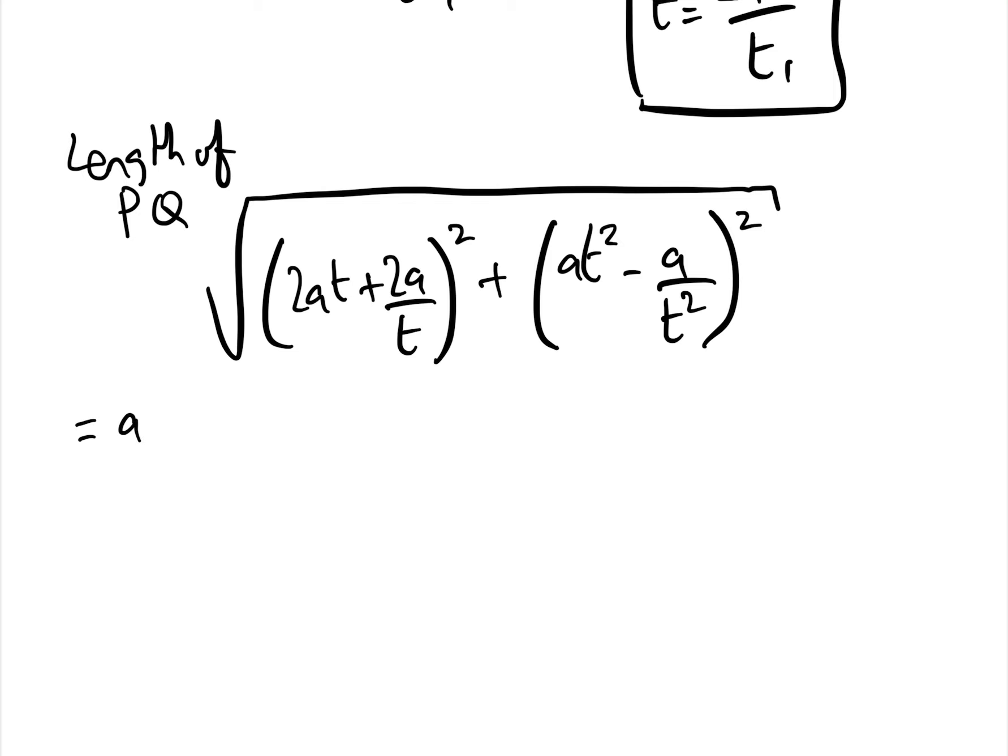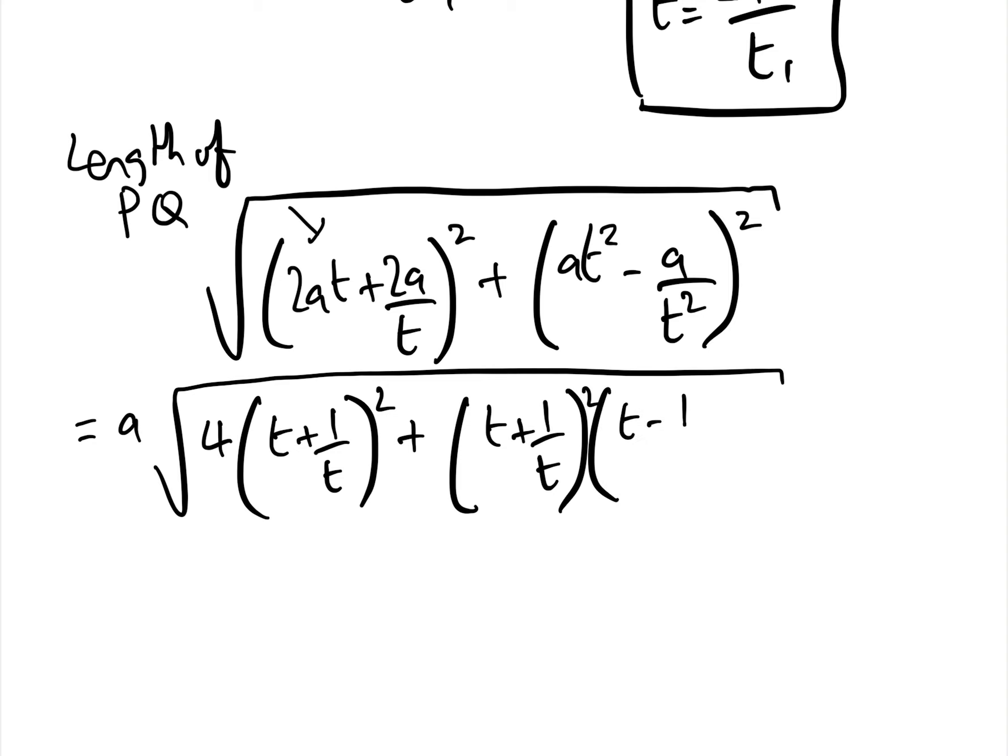Now by the difference, we can take a out of the whole lot of this, so that equals a square root. Well here we can take the 2 out, so that's 4 times t plus 1 over t squared, add, and by the difference of 2 squared here, this gives us t plus 1 over t squared times t minus 1 over t squared.